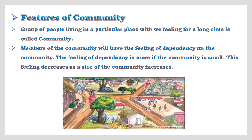Next are the features of community. Here is a picture of a village. We can observe many families living there with many houses in the area — they live in a group, and this is called a community. The group of people living in a particular place with a sense of belonging for a long time is called a community. Every member will have a feeling of dependency, and this feeling is stronger in smaller communities but decreases as community size increases. Most animals in the environment also live in groups, forming their own community.